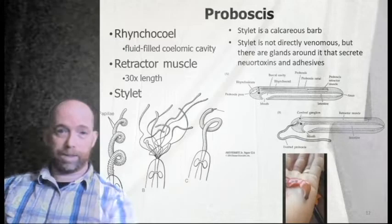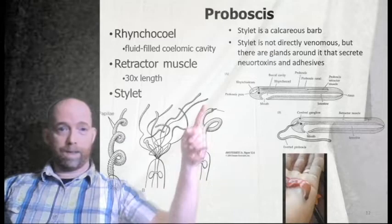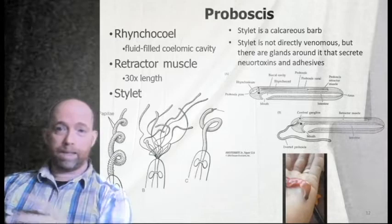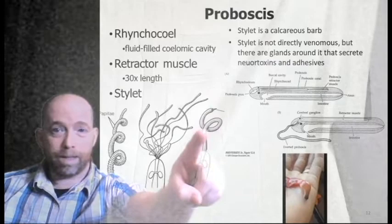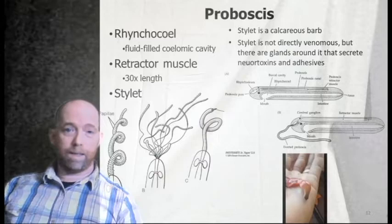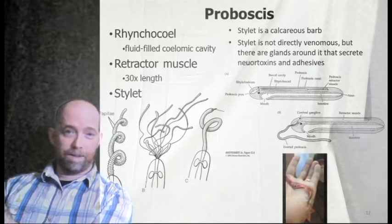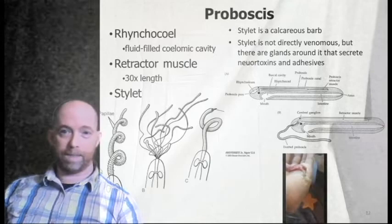The fluid-filled coelomic cavity contains the rhynchocoel. These images show various examples of the rhynchocoel being everted out of the body — it can be super long, up to 30 times the length of the body — tipped by a stylet, which is a calcareous barb. The stylet is not directly venomous but there are glands around the barb that secrete toxins or adhesives. Here's another example of someone finding a nemertean and bothering it until it everts its rhynchocoel.